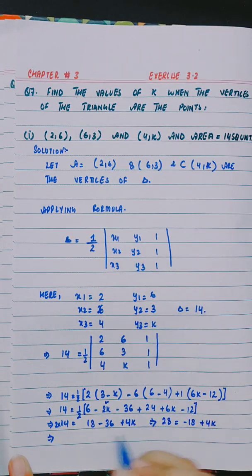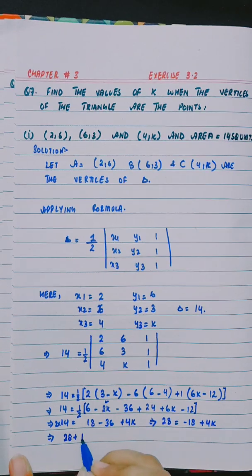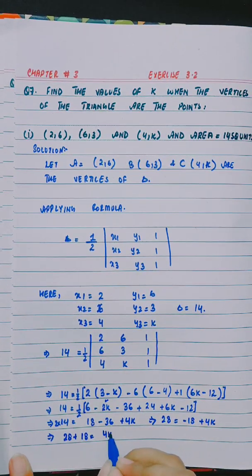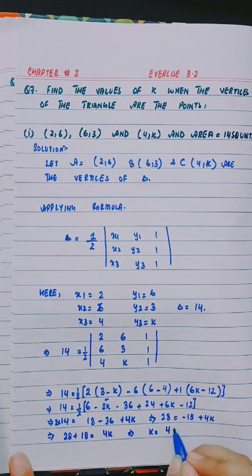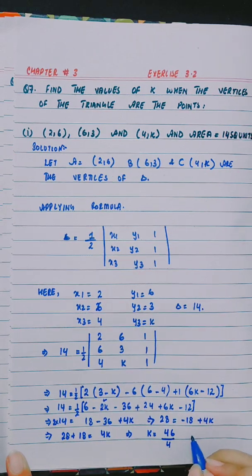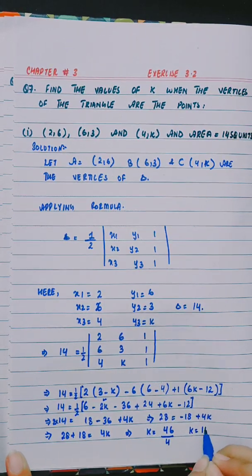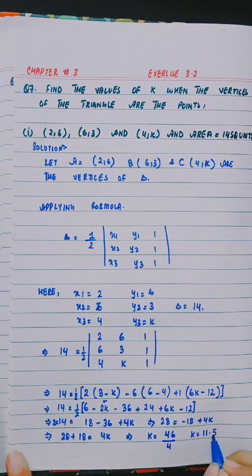This minus 18 will be plus 28, so 28 plus 18 is equal to 4k. And k is equal to 46 divided by 4, and k value is 11.5.